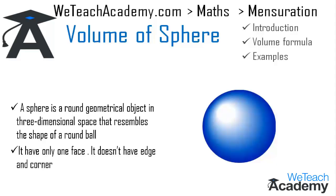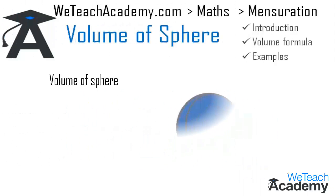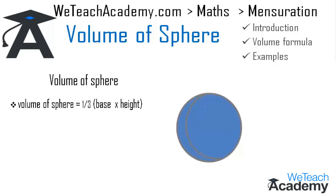Now coming to the next section, we are going to deal with the formula to find the volume of a sphere. The volume of a sphere refers to the amount of space inside it. The general volume formula is one-third into base into height, and it has already been proved that a sphere consists of the areas of four circles, where the area of each circle is equal to πr².